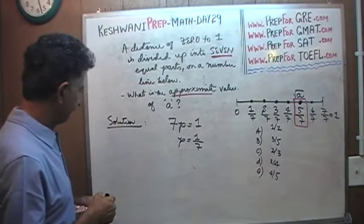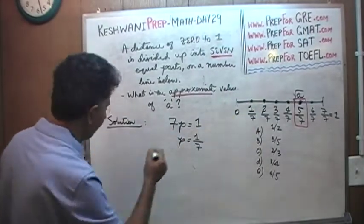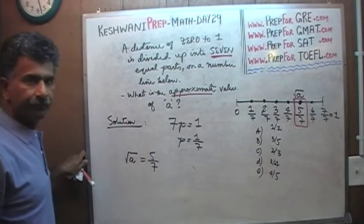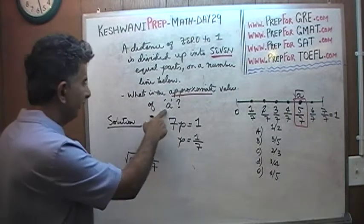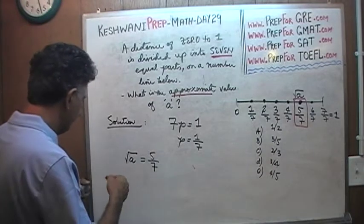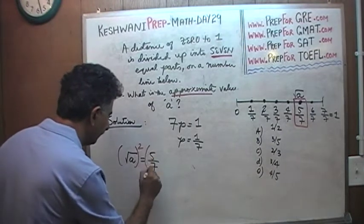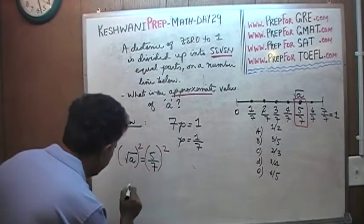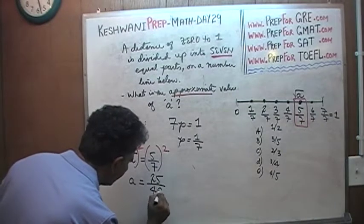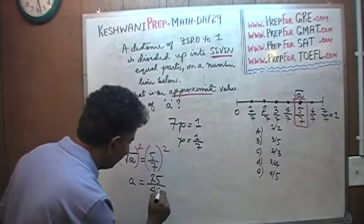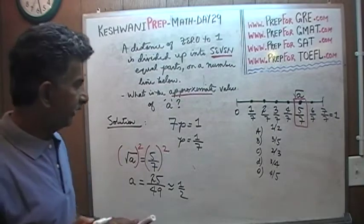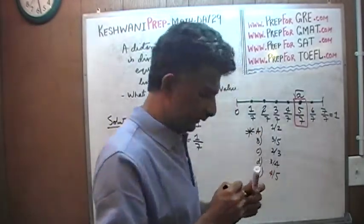So let's make a note: the square root of a must equal five sevenths. How do I find a? You square both sides. Therefore, a must equal 5 squared over 7 squared, which is 25 over 49. Out of the choices we have, this quantity approximately equals one half — 25 over 49 is approximately 25 over 50, which is one half. That is the answer — we are done.